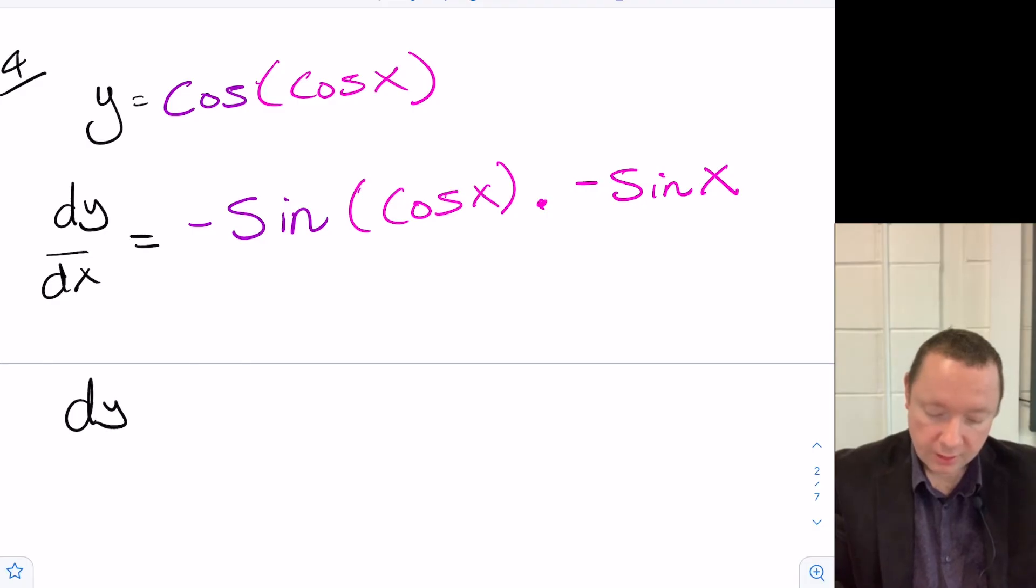Tidying that up just a little bit. dy/dx minus times a minus is a plus. So I've got sin x times the sin of cos x.